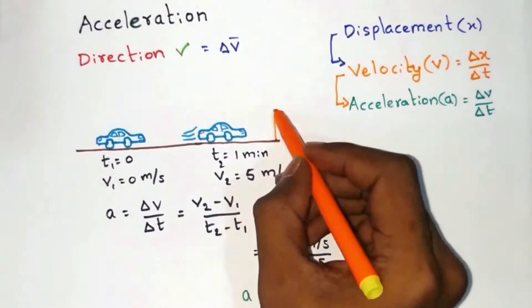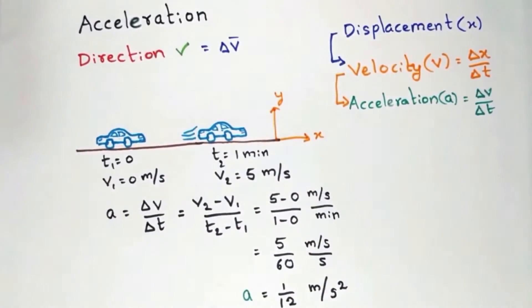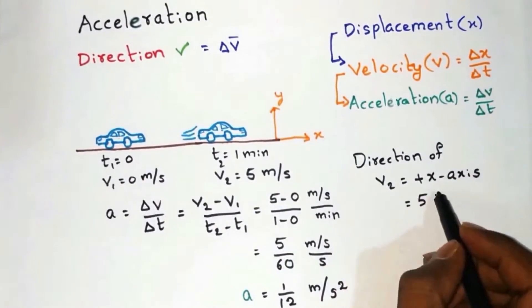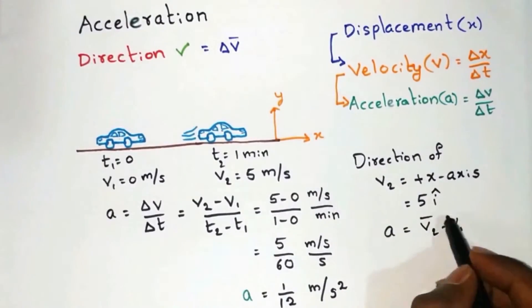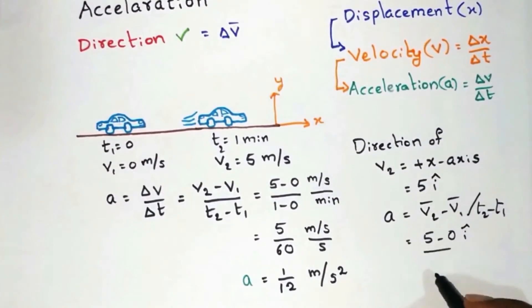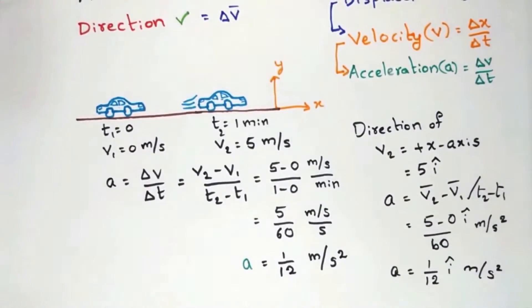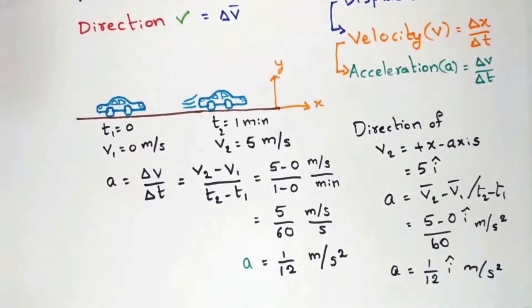Since the velocity of the car is increasing along the positive x-axis, the acceleration direction will be along positive x-axis. We can get the acceleration direction by using the vector method. Since the velocity of the car is along the positive x-axis, v1 equals 0 i-cap and v2 equals 5 i-cap. So we can find the acceleration to be 1 by 12 i-cap meter per second square, which shows the direction of acceleration is along i-cap, which is positive x-axis.